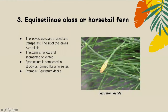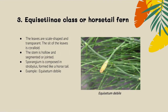My name is Tasya Fadiola. I will give you another classification of ferns. There are Equisetinophyta, or horsetail ferns. They are called horsetails because the leaves are scale-shaped and transparent. The stem is hollow and segmented or jointed, as you can see in the picture. The sporangia are grouped in strobilus form like a horsetail. An example is Equisetum debile.